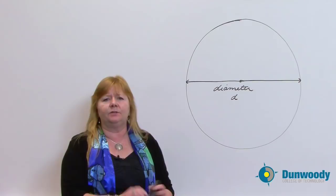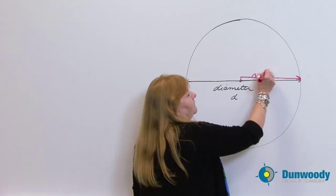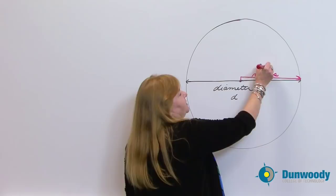Half of the diameter also has a name. And these are two things that I want us to be familiar with so we can have a better conversation. So half of the diameter, which would start at the center and go to the outer edge, is called the radius. And we use a small r to represent radius.